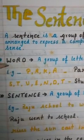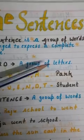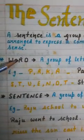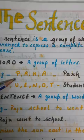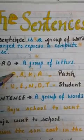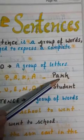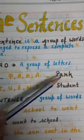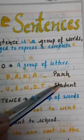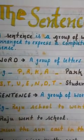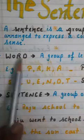First of all, we need to learn what words are. A word is a group of letters — by joining letters we make words. For example, the letters P, R, K, A — by joining all four letters we have made the word 'park'. So by joining letters we make words, and by joining words we make sentences. A sentence is a group of words, and a word is a group of letters.